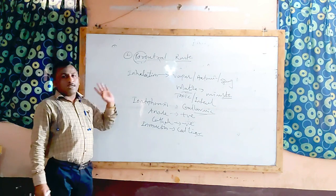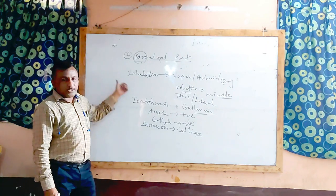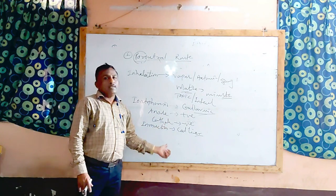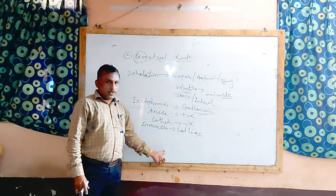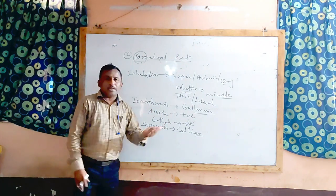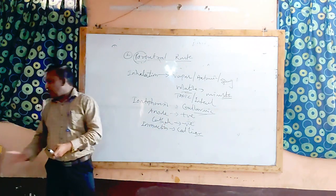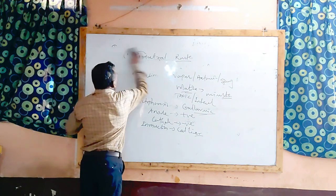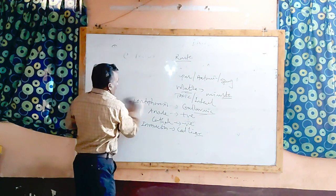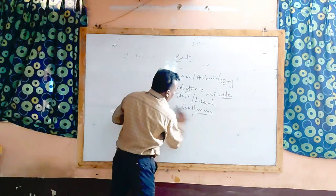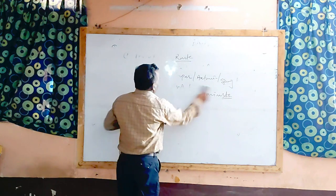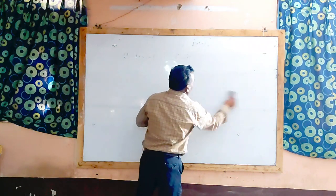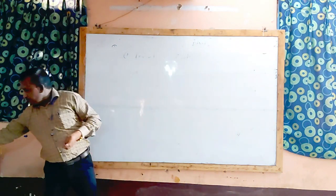So these are the four types under parenteral routes: injections, inhalation, iontophoresis, and inunction. Now the last type under routes of administration is the local or topical route of administration.